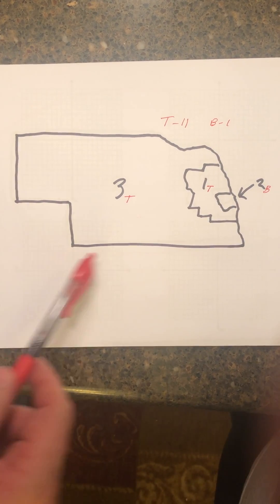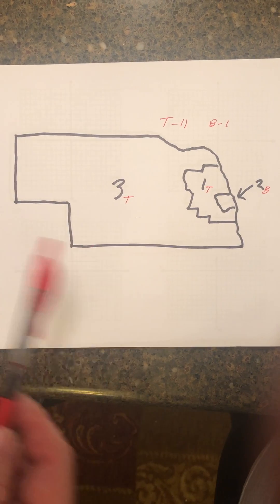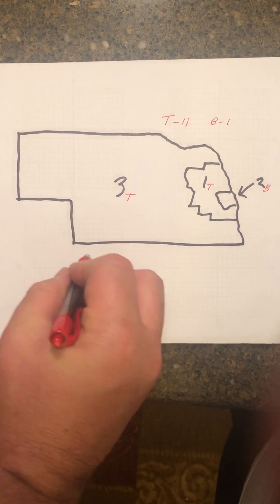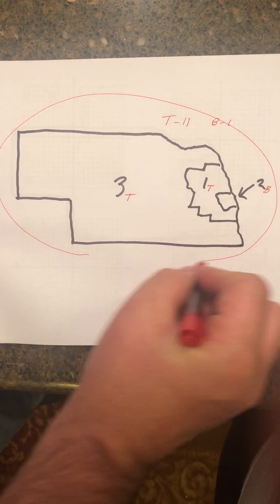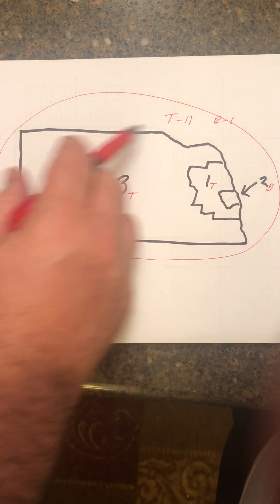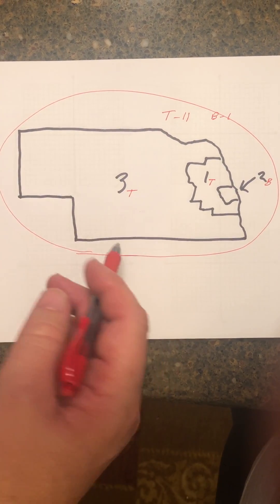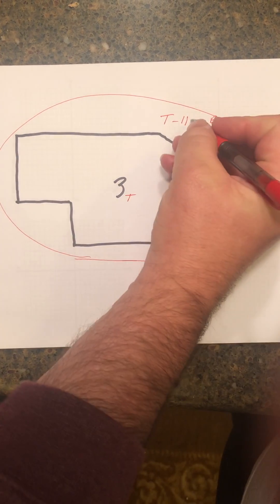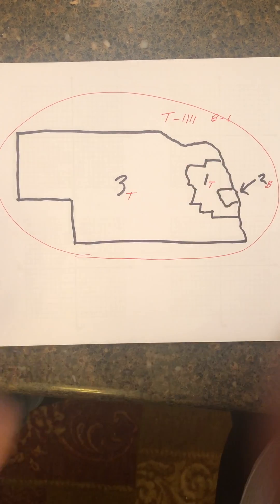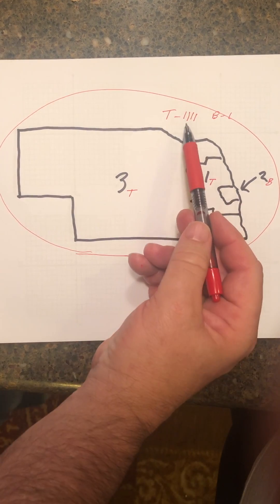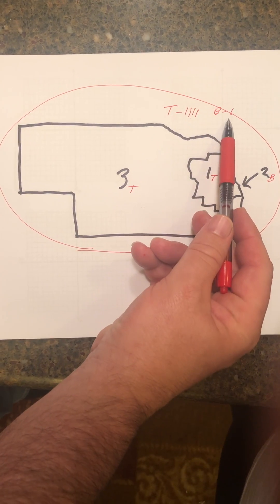Now remember, Nebraska has five electoral votes total. So where do the other two go? What you do is you take the entire state, you count up all the votes throughout the state, and whoever wins the popular vote wins the two Senate district votes. So in this case, Trump is going to have four electoral votes to Biden's one.